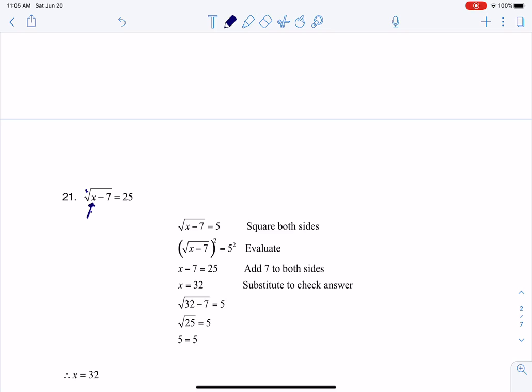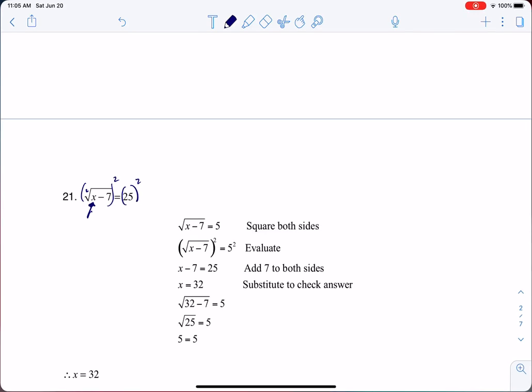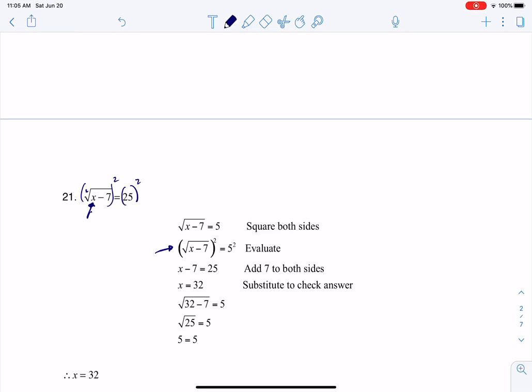So whatever the index of your radical is, what you would do is you would take that number and you would turn it into an exponent on both sides of your equation and that's actually what you see me doing right here.